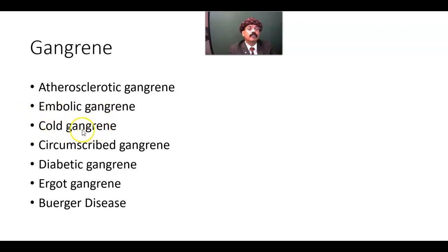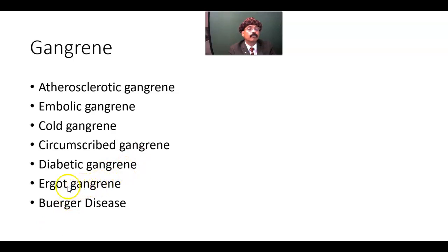Cold gangrene happens without any inflammatory signs — no inflammation — but exposure to extreme cold may cause cold gangrene. Circumscribed gangrene has a line of demarcation between healthy tissue and gangrenous tissue. Ergot gangrene is also possible as a complication of ergot, which leads to vasoconstriction and subsequently gangrene.